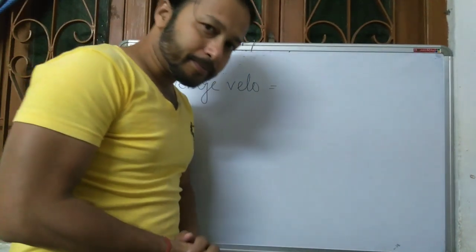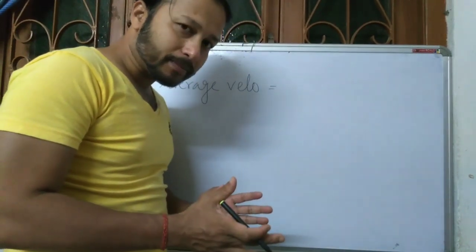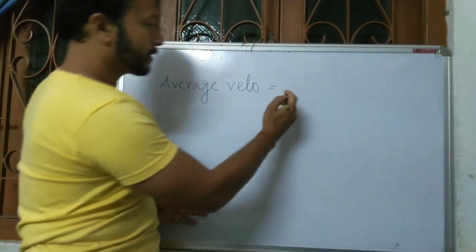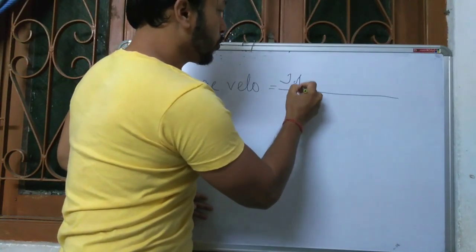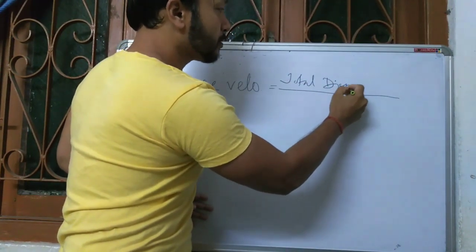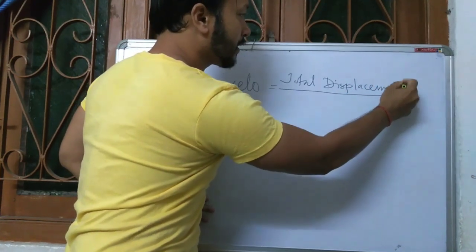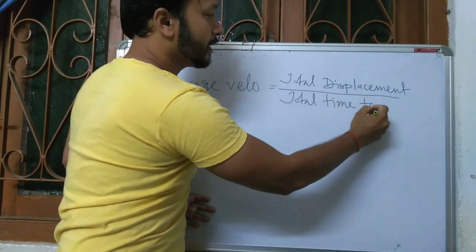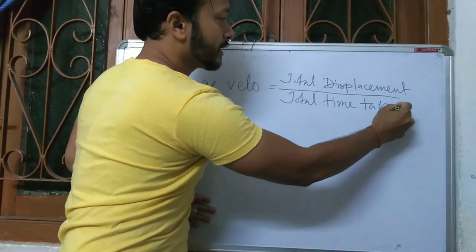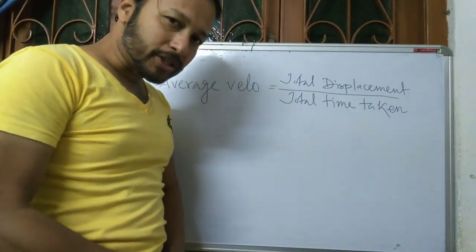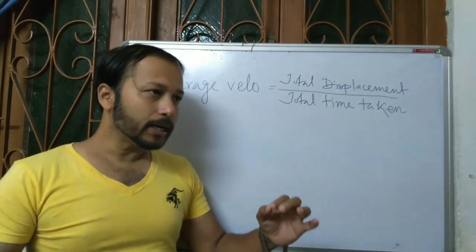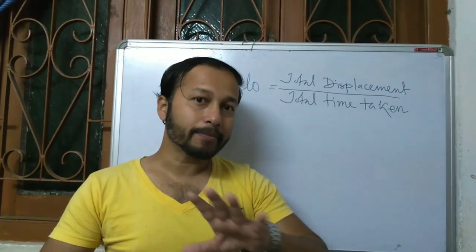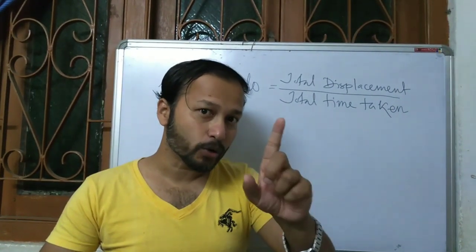Average velocity. The formula is very simple. Average velocity equals total displacement divided by total time taken. Average velocity means the total displacement covered by an object divided by the total time taken by that object to cover that particular distance.